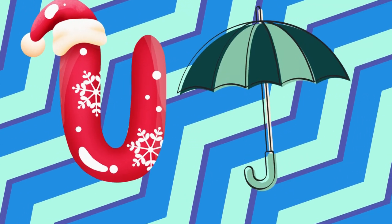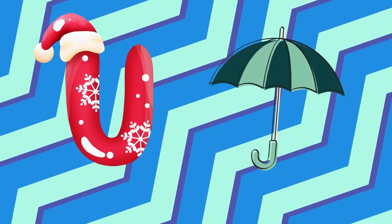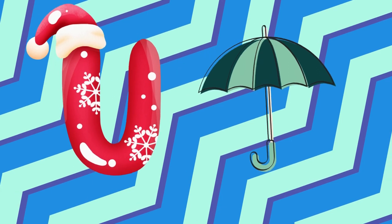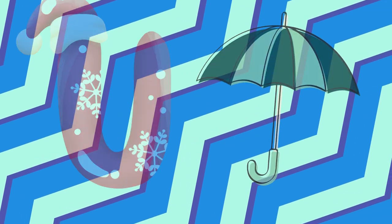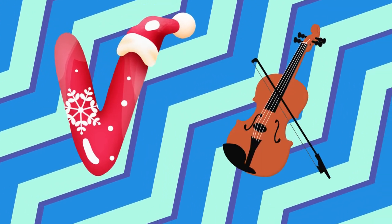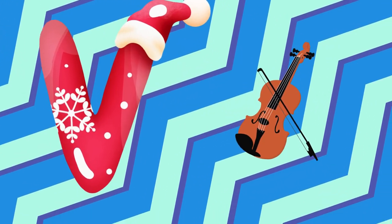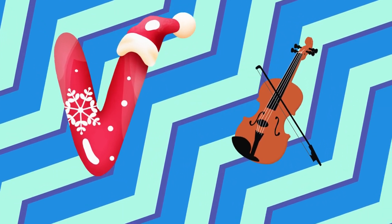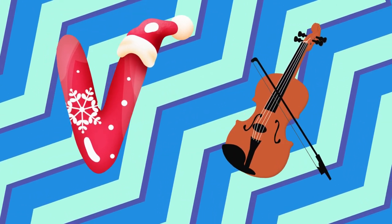U is for umbrella, u-u-umbrella. V is for violin, v-v-violin.